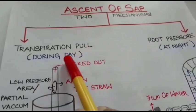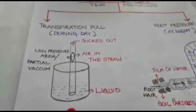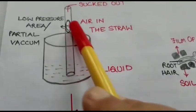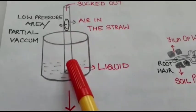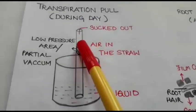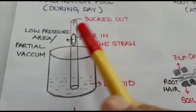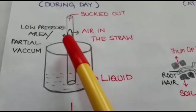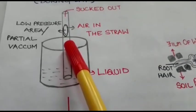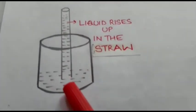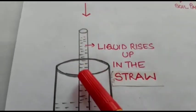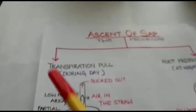Let us understand transpiration pull by taking an example of drinking a liquid with the help of a straw. When we suck the air out of the straw, a low pressure area or partial vacuum is created in the straw, which creates a suction pull in the upward direction. Because of this suction pull, the liquid starts to rise up in the straw. The same concept or the same principle operates in plants.